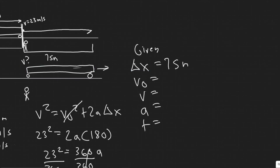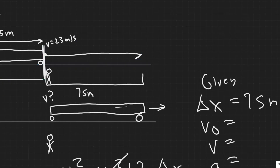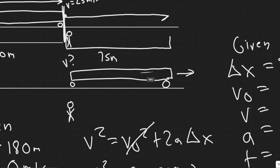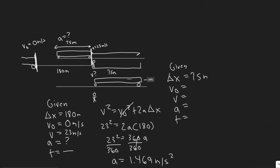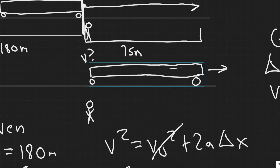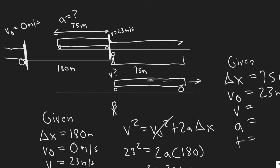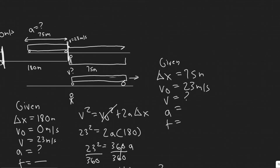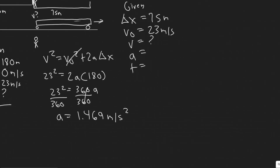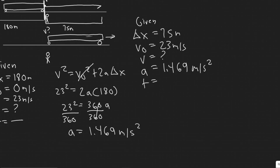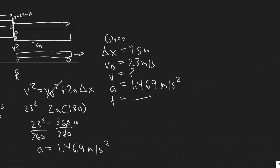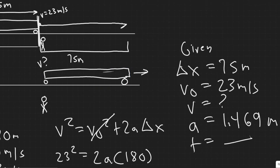The initial velocity at this interval is 23 meters per second — the same as the final velocity of the previous interval, since the front of the train was just at the worker. The final velocity is what we want to solve for, because we want the speed of the back of the car when it reaches the worker. Acceleration is 1.469 m/s² since it's constant. Time is unknown and not needed. We have three variables and can solve for v.